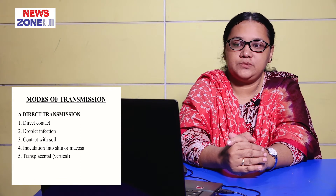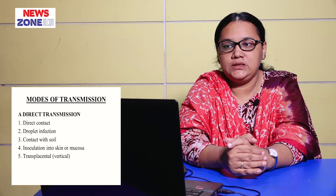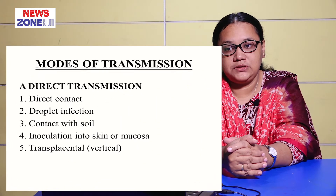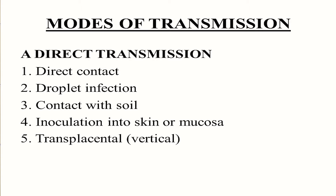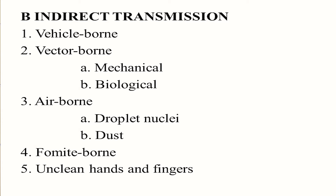Mode of transmission is also of two types: direct transmission and indirect transmission. In direct transmission: direct contact, droplet infection, contact with soil, inoculation into skin or mucosa, or transplacental form — transplacental means from mother to fetus. Indirect transmission includes vehicle-borne, vector-borne (mechanical and biological), air-borne (droplet nuclei and dust), fomite-borne, and unclean hands and fingers.